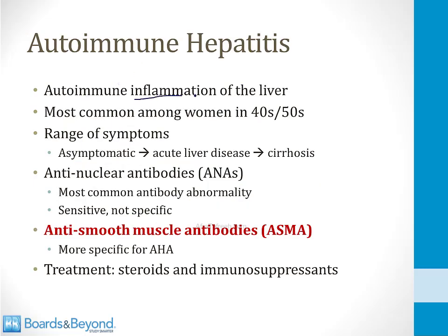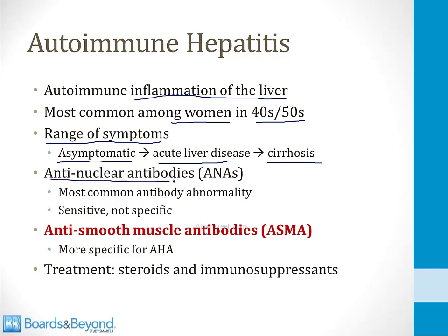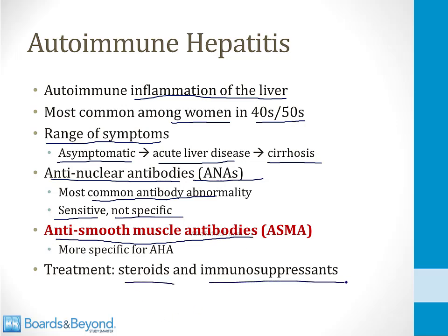Autoimmune hepatitis is autoimmune inflammation of the liver. It's more common among women — true of most autoimmune disorders — and it classically occurs in the 40s and 50s. Sometimes the disorder is asymptomatic and is picked up when AST and ALT levels are measured for another reason. It can cause acute liver disease and rarely can progress to cirrhosis. You can make a diagnosis with antibody testing. Antinuclear antibodies, or ANAs, are the most common abnormality, but they are sensitive rather than specific for autoimmune hepatitis. The more specific autoantibody is anti-smooth muscle antibodies. Autoimmune hepatitis can be treated with steroids and other immunosuppressants.